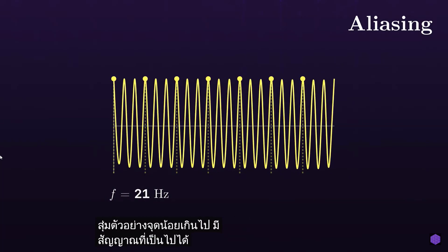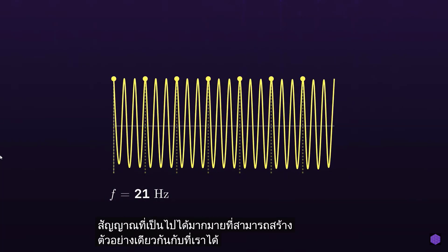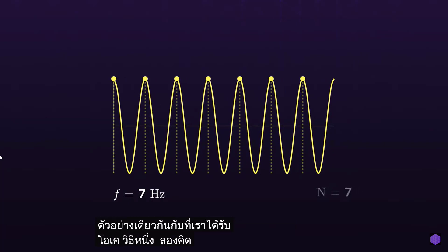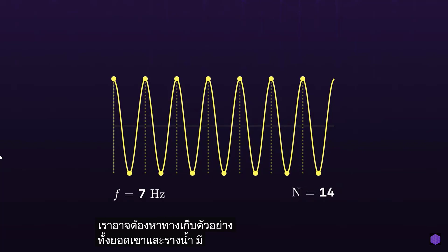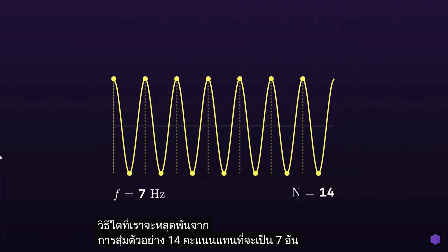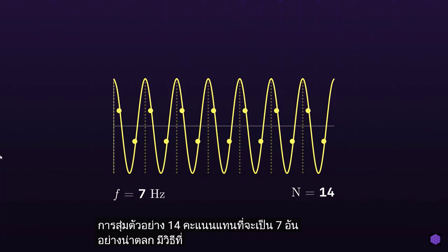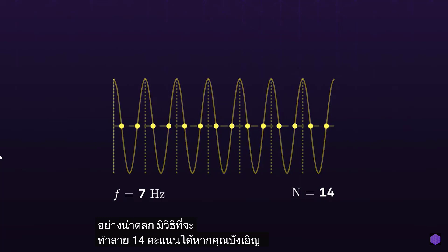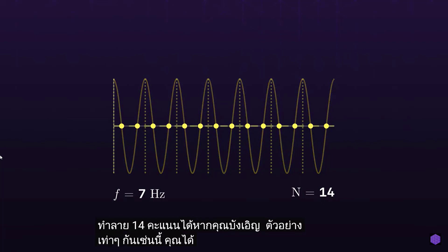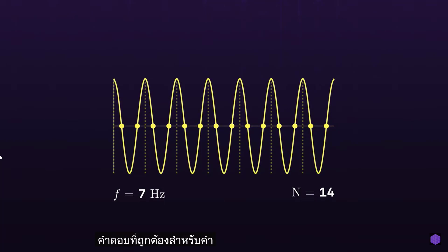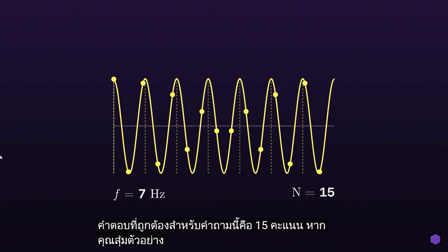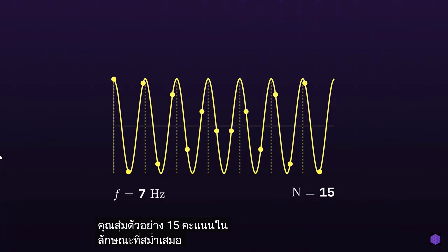One way to think about this is we probably need to find a way to sample both the peaks and the troughs. So is there a way we can get away with sampling 14 points instead of 7? Funnily enough, there's a way to even break 14 points. If you happen to sample evenly such as this, once again you get a constant signal. It turns out the correct answer for this question is 15 points. If you sample 15 points in any uniform manner, you are guaranteed to accurately represent this 7 Hz signal.